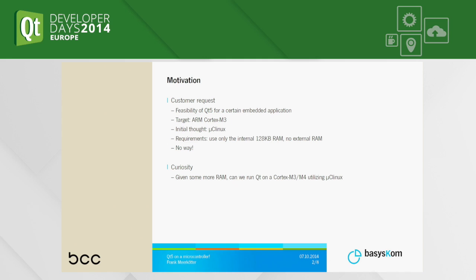The target the customer had in mind was an ARM Cortex M3, which is a large 32-bit microcontroller — really the high-end, but still a microcontroller, so no MMU, which means no virtual memory. What immediately came to our mind was to use uCLinux and run Qt on top of it, but unfortunately the customer came forward with another requirement: he intended to use only the internal RAM of the microcontroller, which is 128 kilobytes. So that was the end of that story — both uCLinux and Qt are out of the equation.